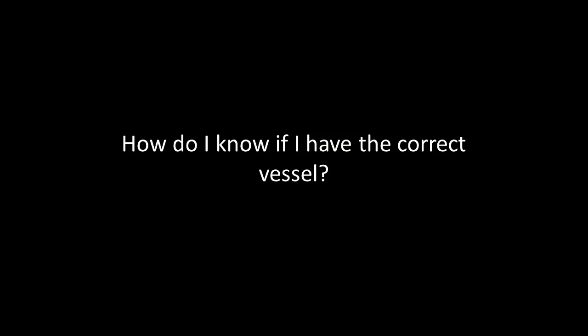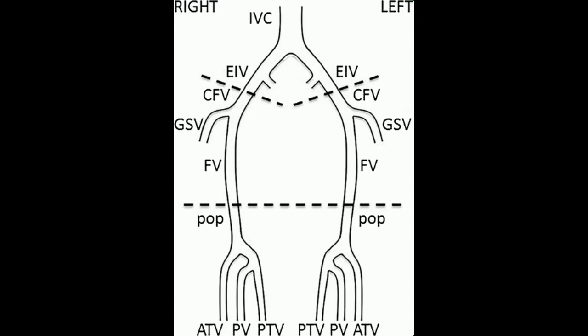Now I'll be showing the required images for this study along with some landmarks to help orientate yourself and to be able to differentiate the difference between veins and arteries. This image shows where the vessels lie in comparison to each other. We start off with the GSV, then go to the common femoral vein, then down to the deep femoral, and then femoral vein proximal, mid, and distal, all the way down to the popliteal. Then you get the PTV and the peroneal vein.